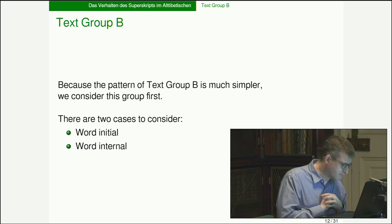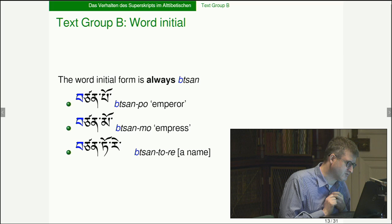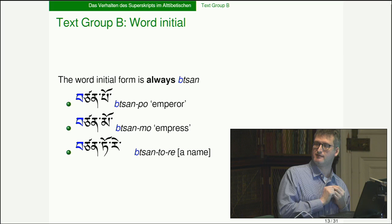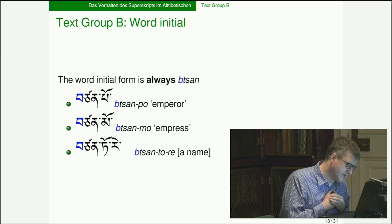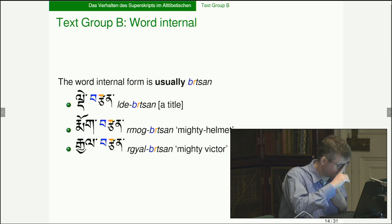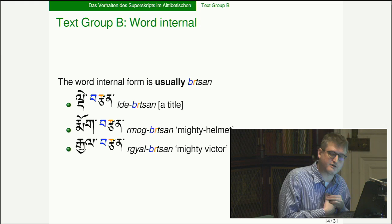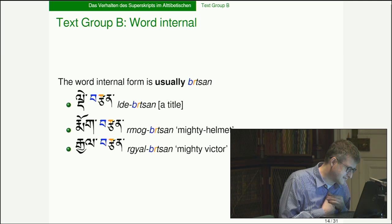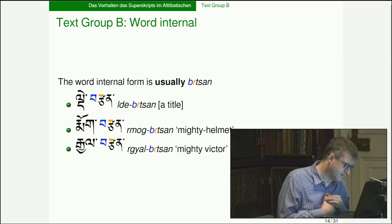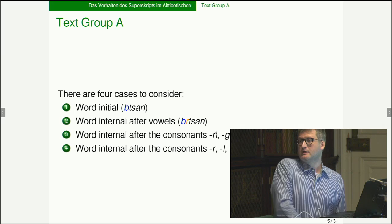In text Group B, the word-initial form is always 'btsan' — with the 'b' but without the 'r.' You get things like 'tsenpo' (emperor), 'tsenmo' (empress), and 'centore' (a person's name). Word-internally, the form is usually 'brtsan' — with both the 'b' and the 'r' — giving things like 'detsen' (a title), 'moctsen' (mighty helmet), and 'geltsen' (mighty victor).